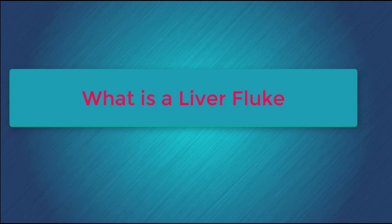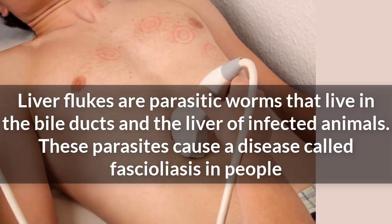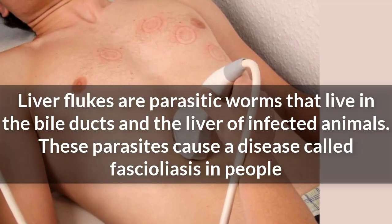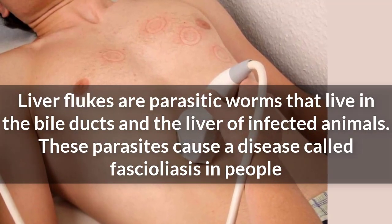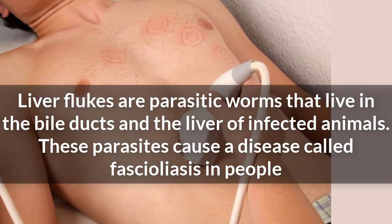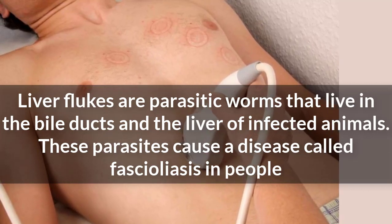What is a liver fluke? Liver flukes are parasitic worms that live in the bile ducts and the liver of infected animals. These parasites cause a disease called fascioliasis in people, cattle, and sheep.